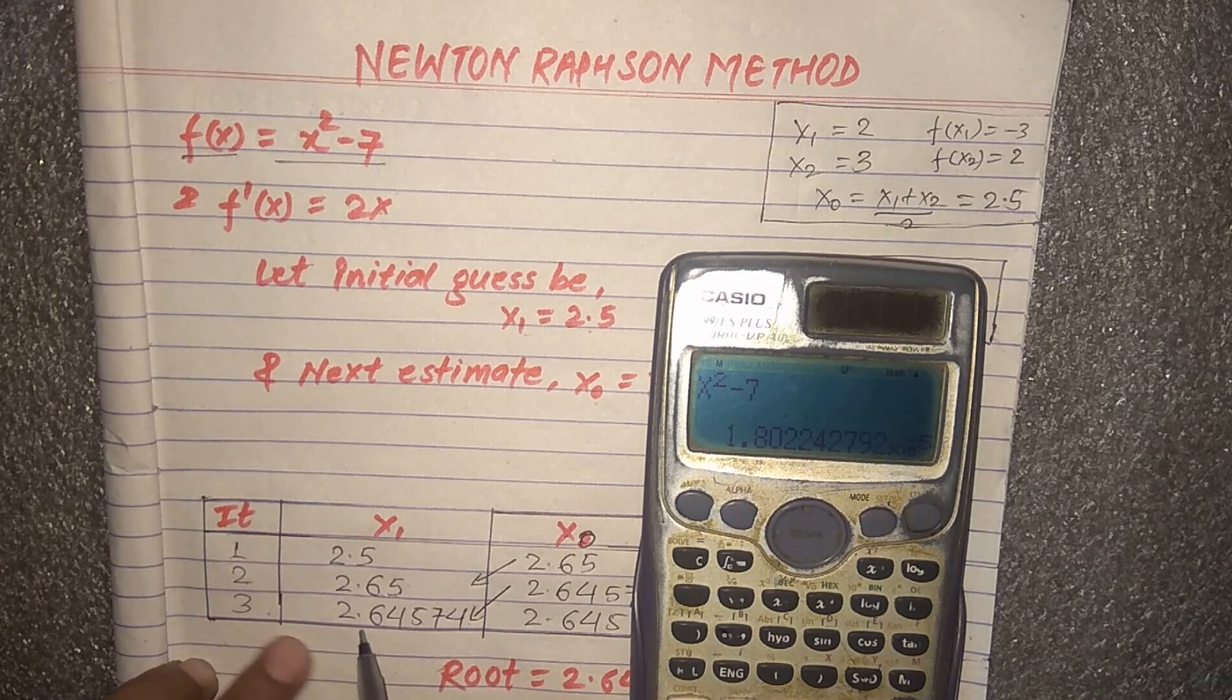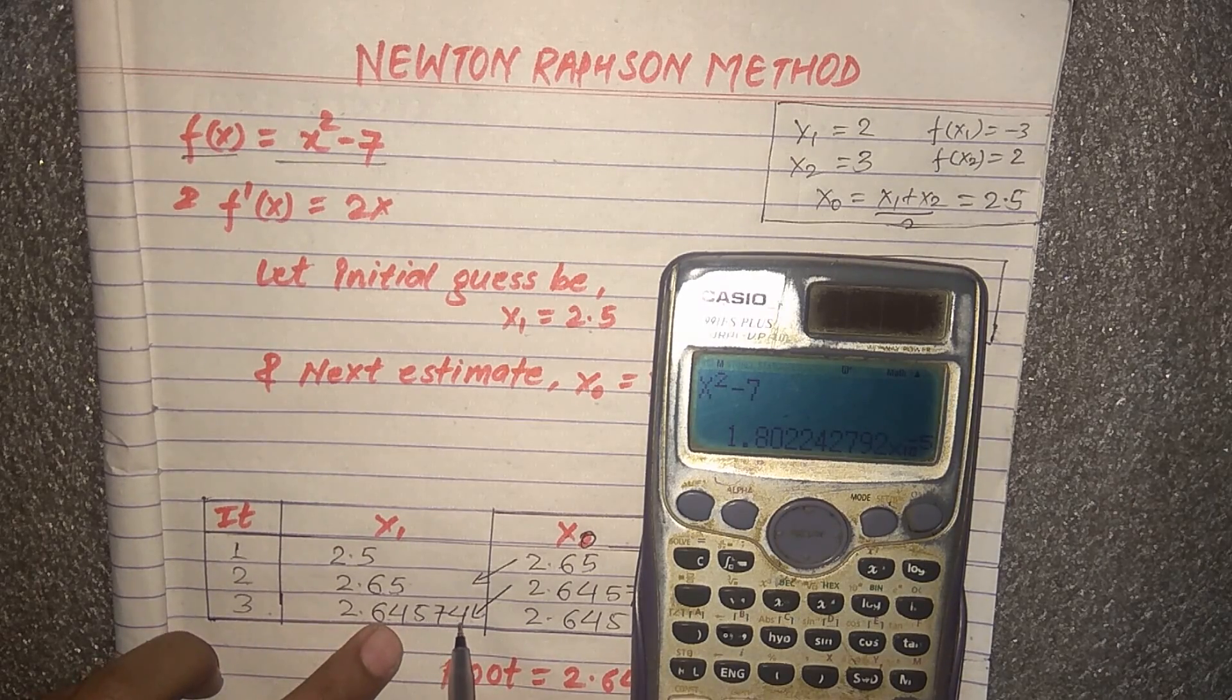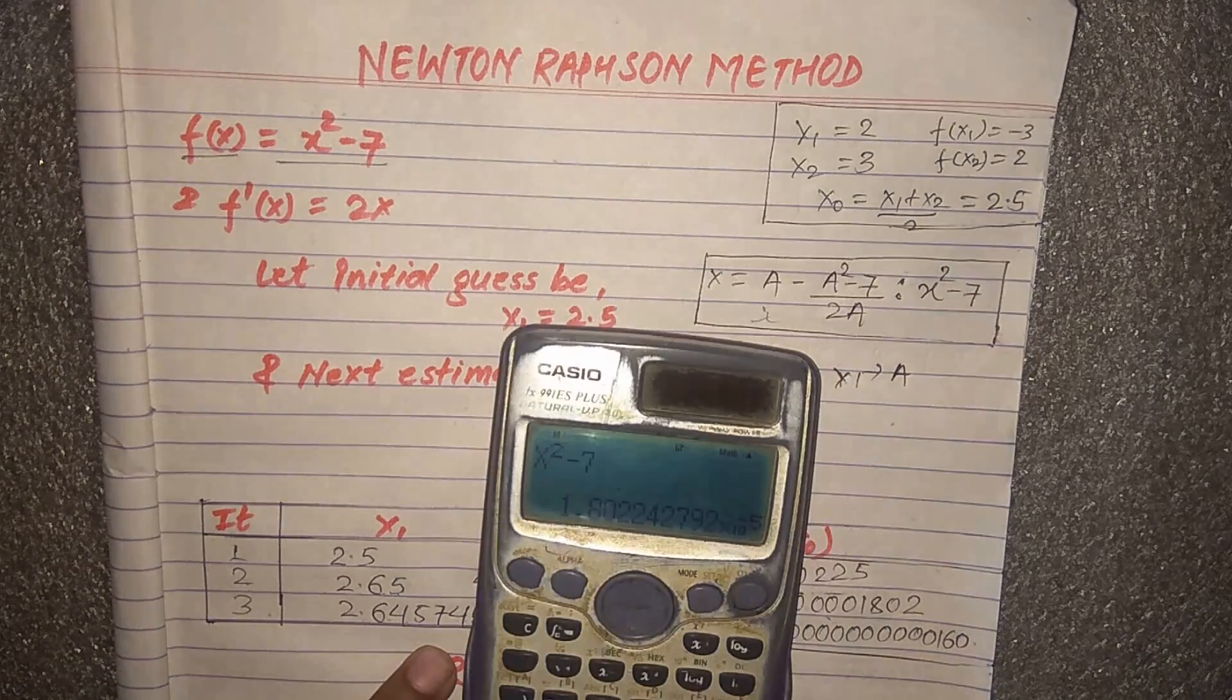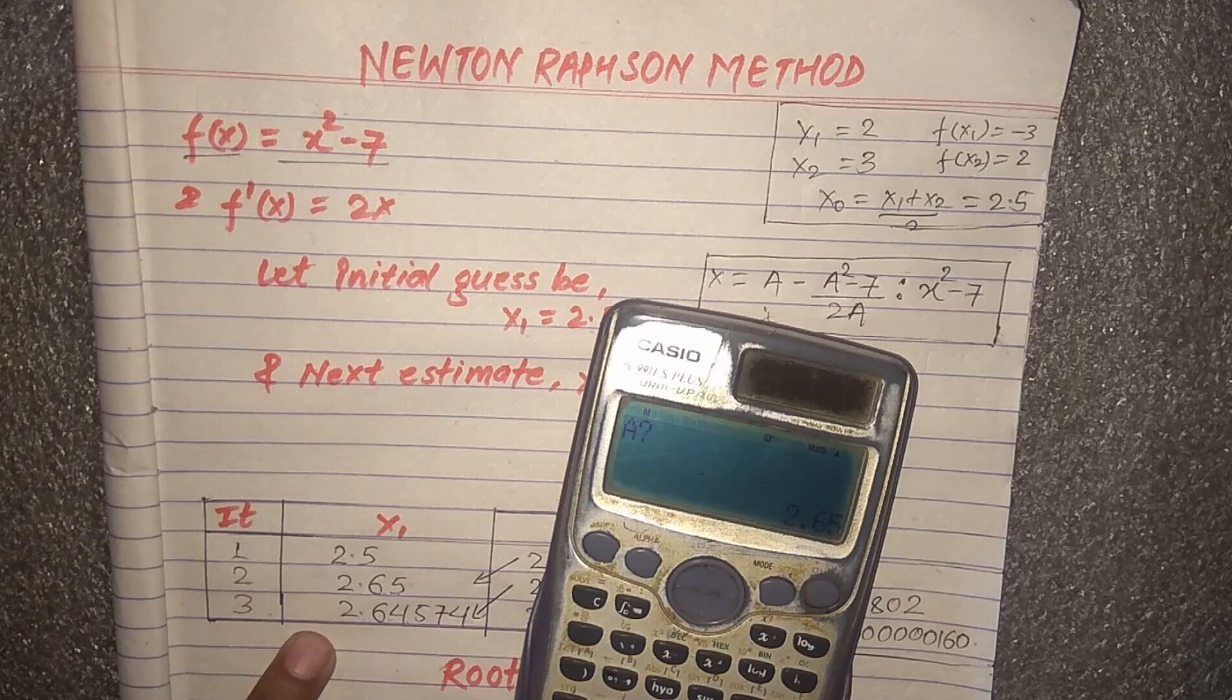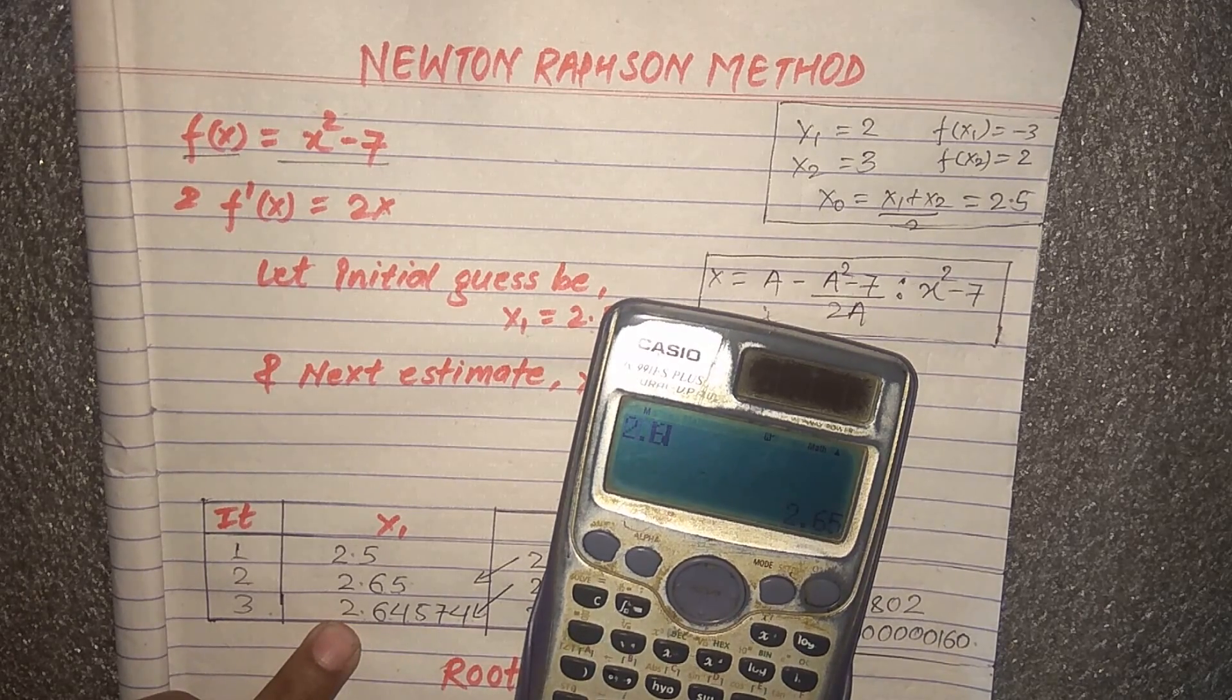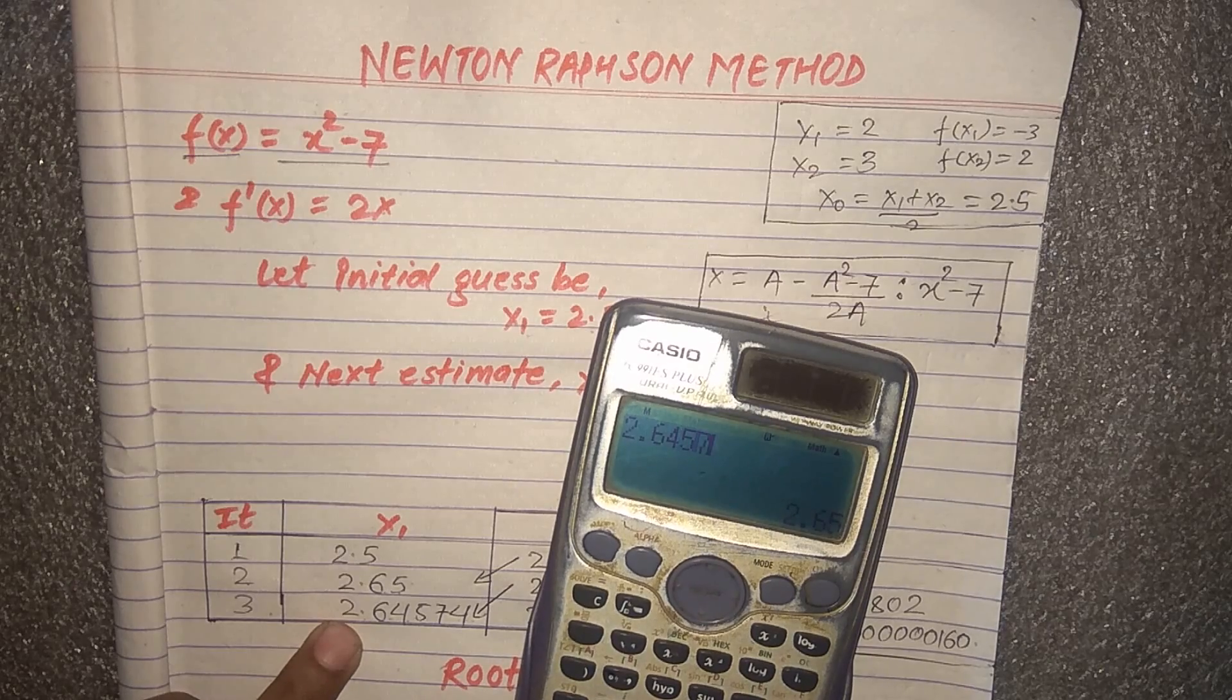In the third iteration we get 2.64574. In the same way we can calculate the third iteration. In place of a now we write 2.64574.